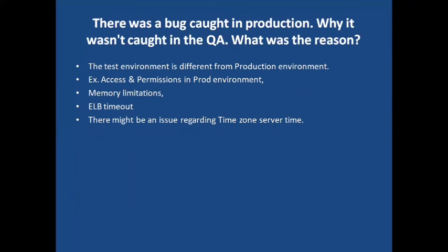Next question: a bug was caught in production that wasn't caught during QA testing — why? This is a scenario where you gave a green flag, the feature was released, and the customer found a bug in production. Possible reasons include: the test environment is different from production — for example, the test environment had no load balancer configured, but production has a distributed environment with a load balancer. Another reason: permissions on the production environment differ — a particular service required for the functionality lacks the necessary access privileges in production.